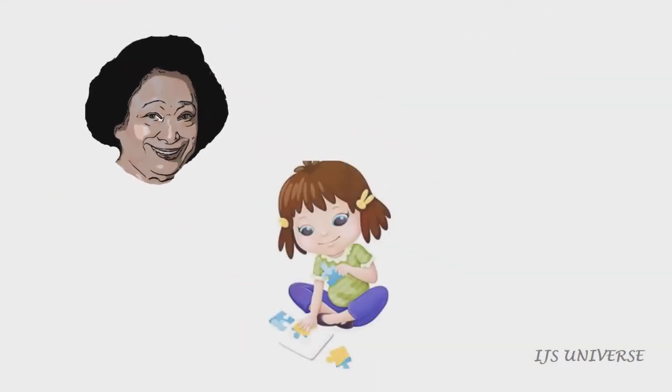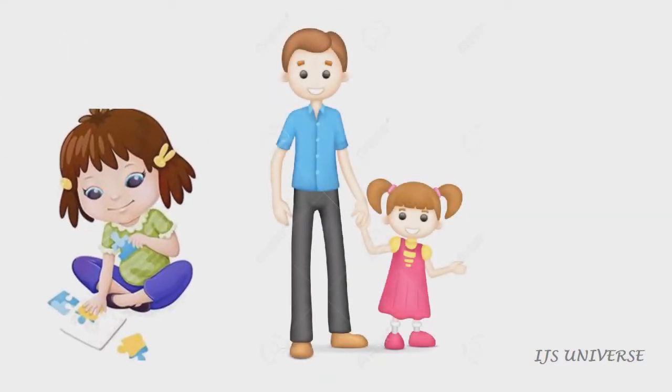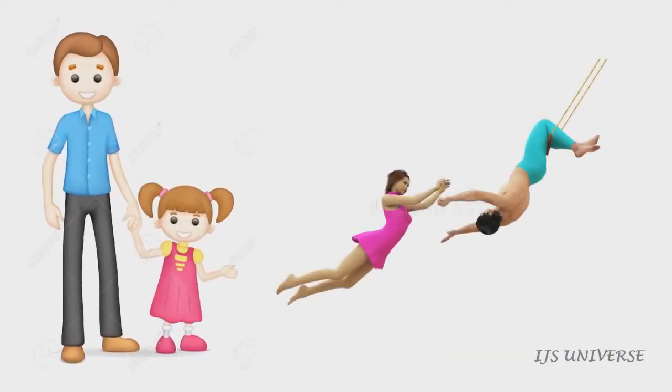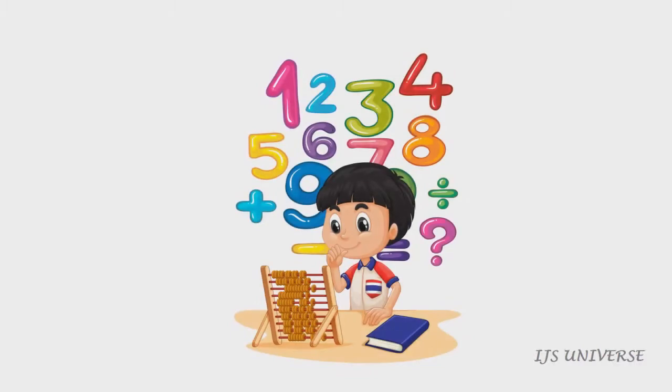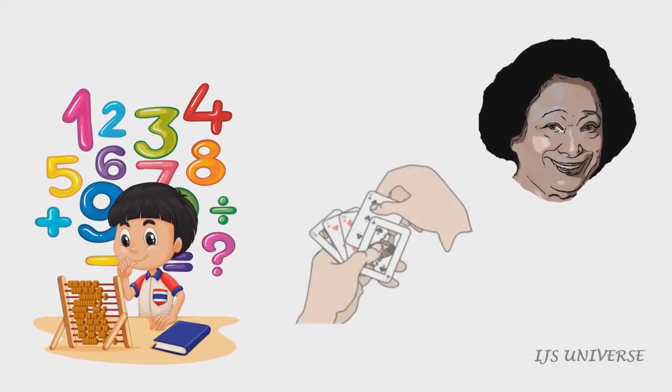Shakuntala Devi was only three years old when her father, who worked as a trapeze artist, found out she was good at memorizing numbers when he was teaching her a card trick.